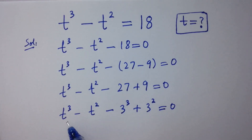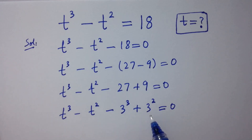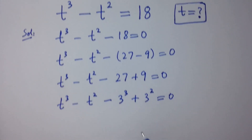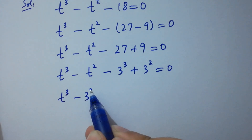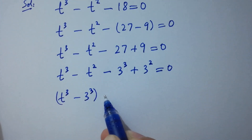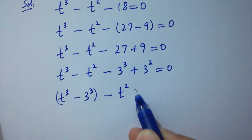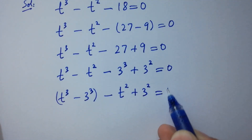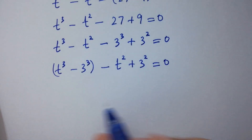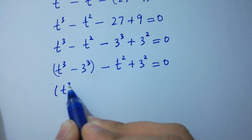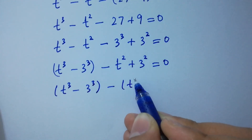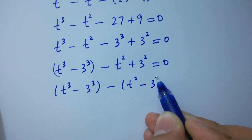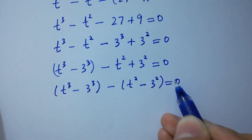By corresponding: here is t cubed and here is 3 cubed, here is t squared and here is 3 squared. So this becomes t cubed minus 3 cubed minus t squared plus 3 squared equal to 0.